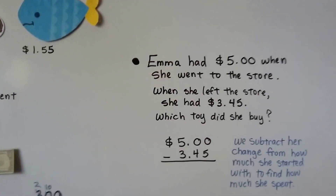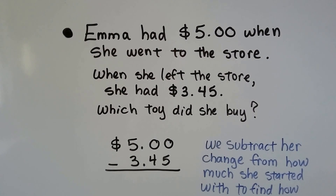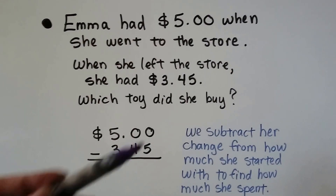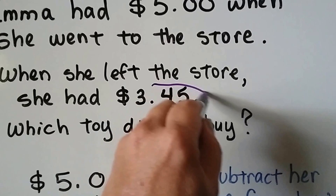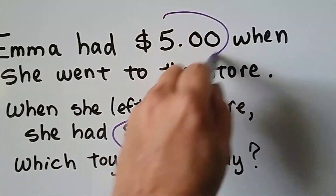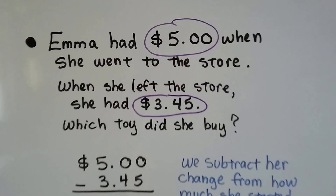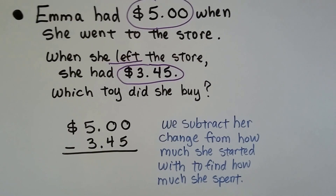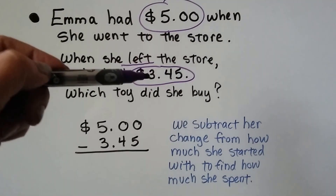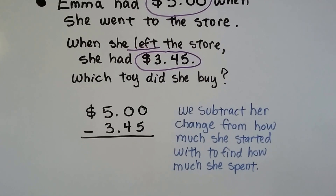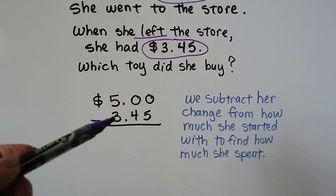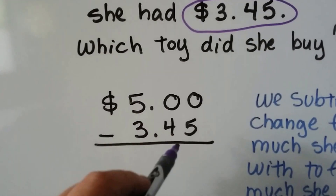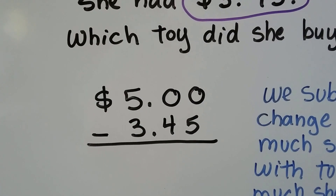Emma had five dollars when she went to the store. When she left the store she had three dollars and forty-five cents. Which toy did she buy? The word 'left' means leftover, so we need to find the difference — that's a subtraction problem. We subtract her change, how much she had left, from how much she had when she went to the store: five dollars.